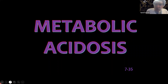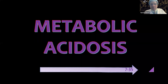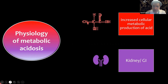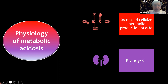Now moving on to metabolic acidosis. How does metabolic acidosis occur? It occurs in two ways: either there is increased cellular metabolic production of acid, or there is loss of alkali through the kidney or GI tract, or the kidney is unable to generate the normal amount of bicarbonate daily. These are the mechanisms by which you get metabolic acidosis.